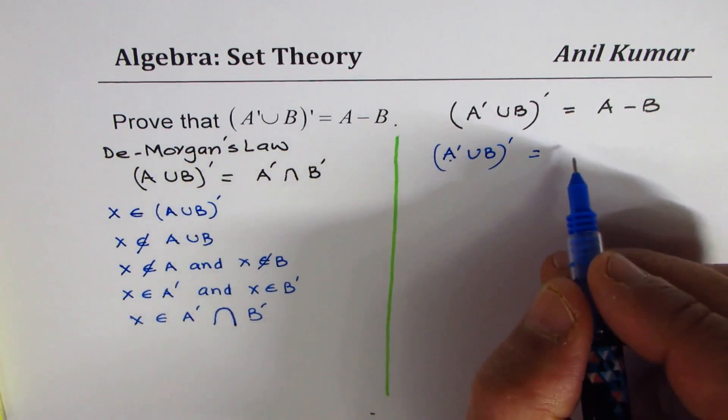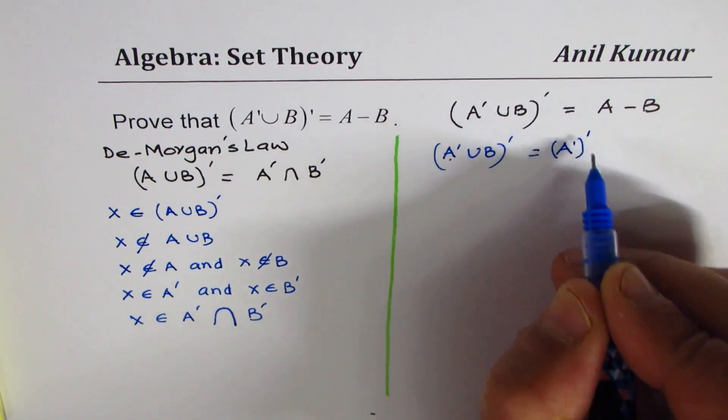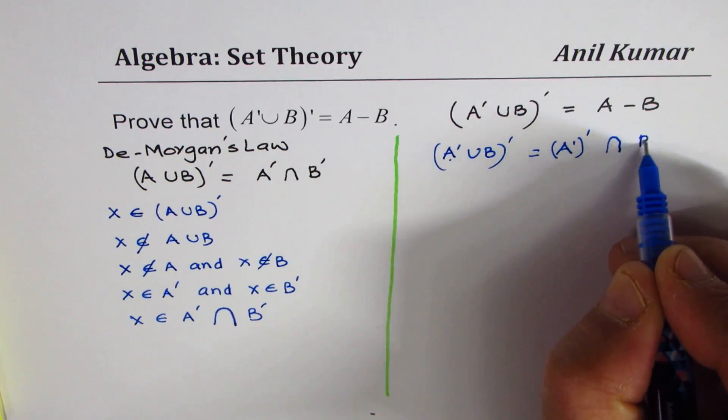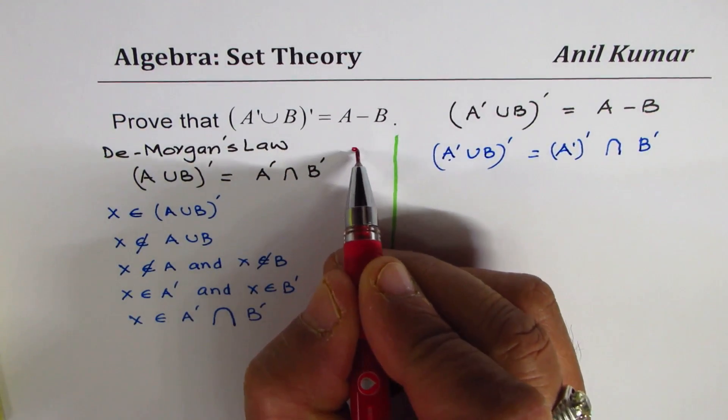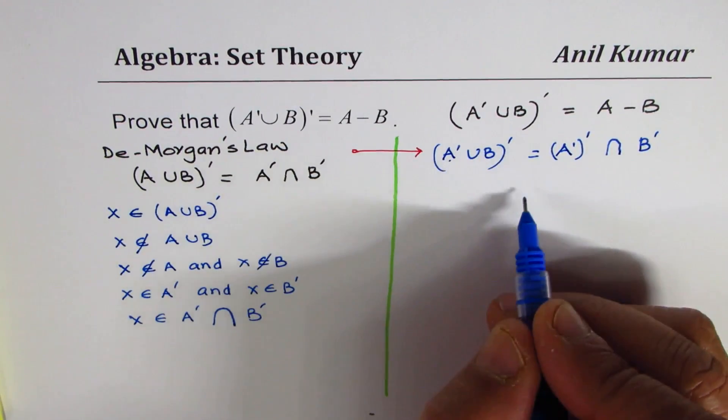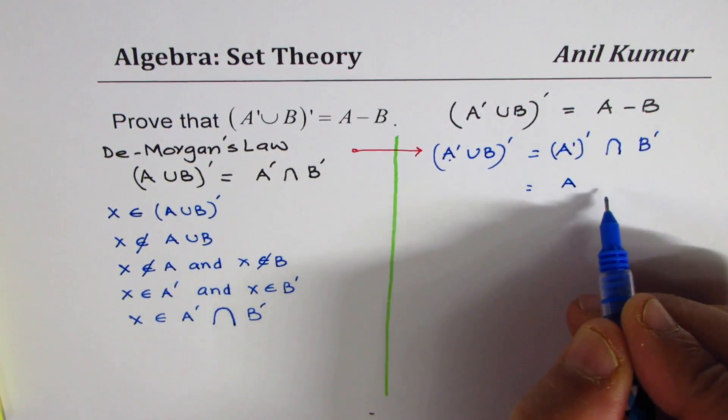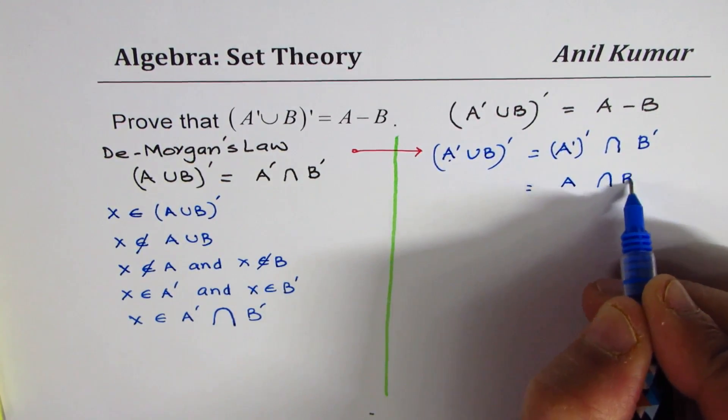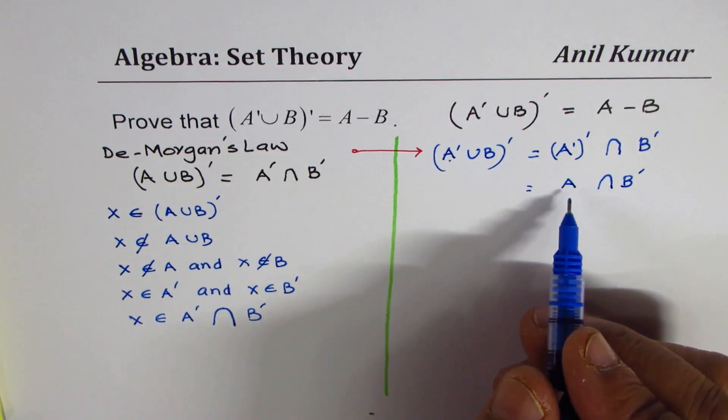De Morgan's Law states that whatever complement we are looking at, something union complement, could be written as the intersection of these two things. So that is equals to complement of A prime intersection complement of B. We have used De Morgan's Law to get to the first step, and now from here we know complement of complement is A itself, so it becomes A intersection B complement.